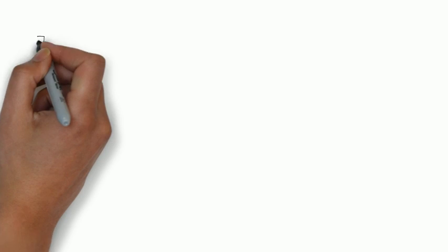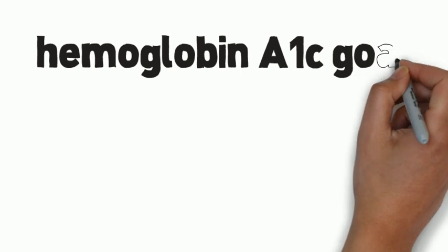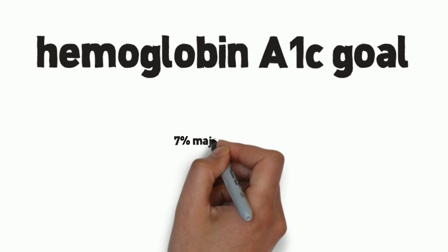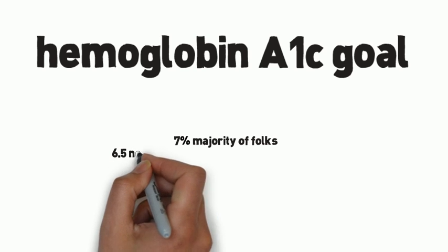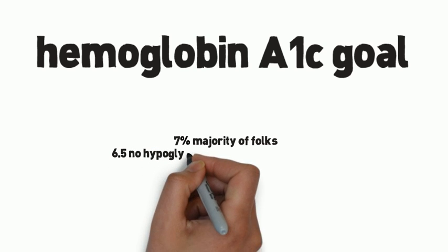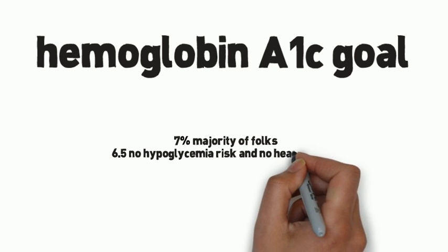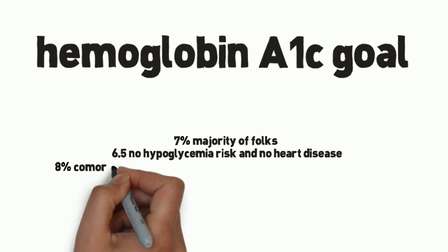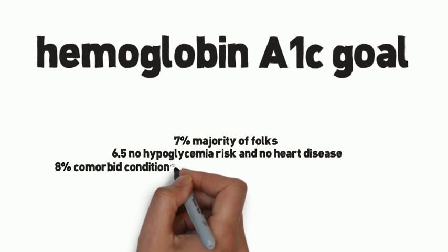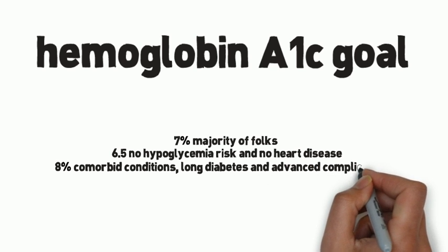The hemoglobin A1c goal can be less than 6.5%, less than 7%, or even less than 8% depending on the patient. The majority of patients can have a goal of less than 7%. A goal of less than 6.5% is for select individuals not at risk for hypoglycemia and without significant heart disease. A goal of less than 8% is for patients with significant comorbid conditions, long-standing diabetes, and advanced complications.